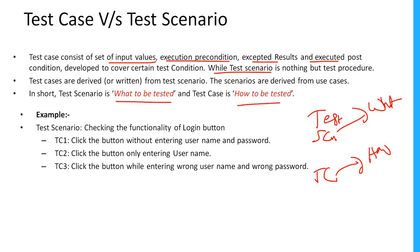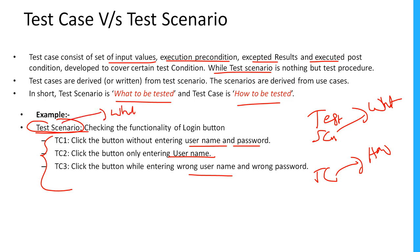For example, the test scenario would be: checking the functionality of the login button. For this one test scenario we can write any number of test cases — for example: click the login button without entering username and password; click the button entering only the username; click the button while entering wrong username and wrong password. So for one scenario we can create multiple test cases. The scenario says what and the test case says how to test in detail.